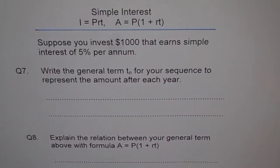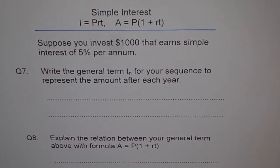Simple interest. Question 7. We are continuing with the same investment. Suppose you invest $1000 that earns simple interest of 5% per annum. So that is what we have started with and we are continuing with. The idea here is to work with simple values so that you understand the concept.